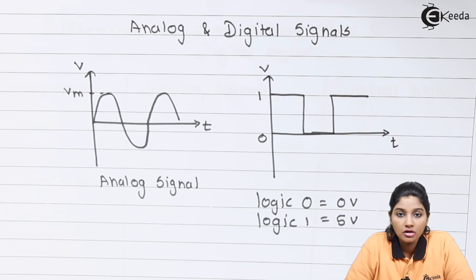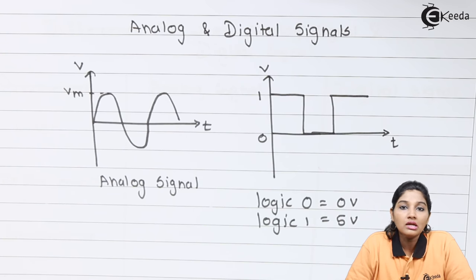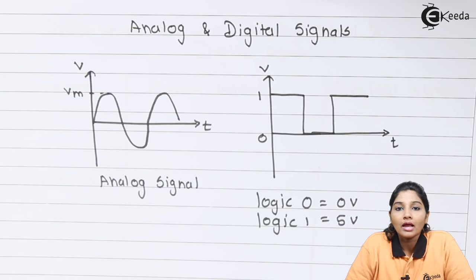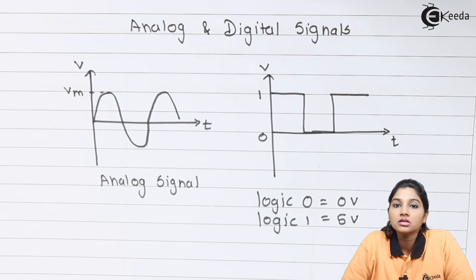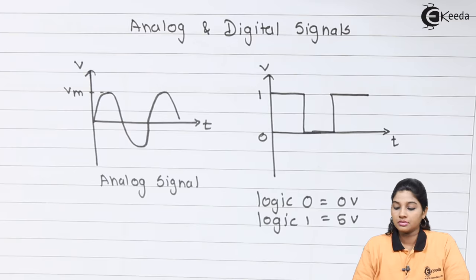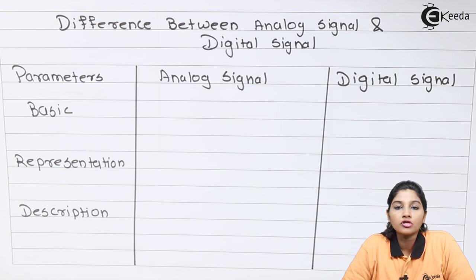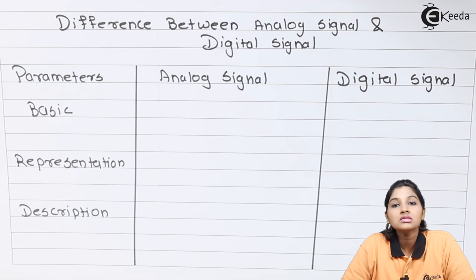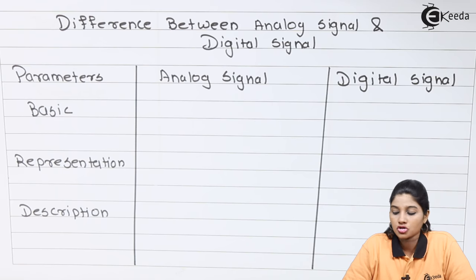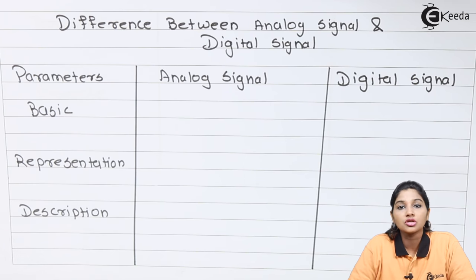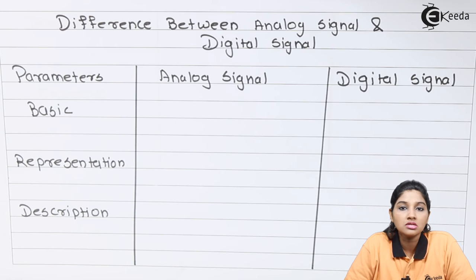In the case of analog signals, the signal may get distorted due to the introduction of noise or distortion. But in the case of digital signals, as they have only two states — 0 and 1 — the effect of noise and distortion is very much less compared to analog signals. Analog signals carry information in continuous variation of time whereas digital signals carry information in discrete intervals of time.